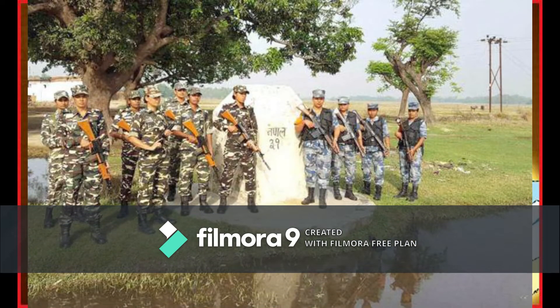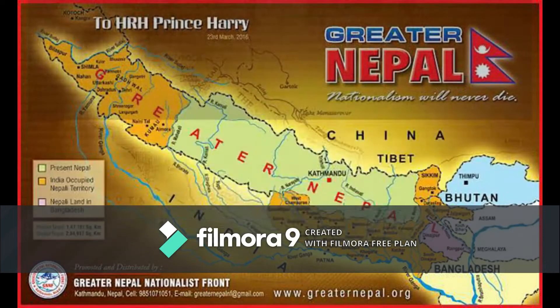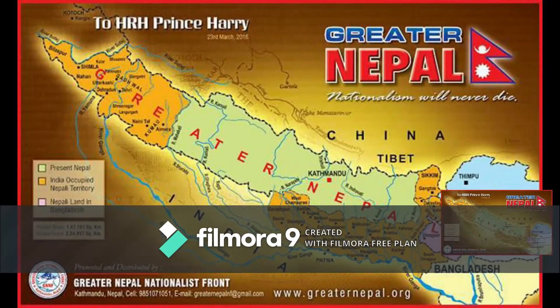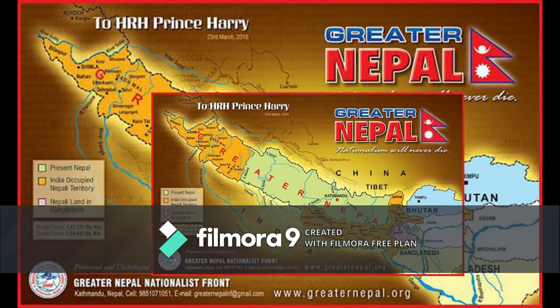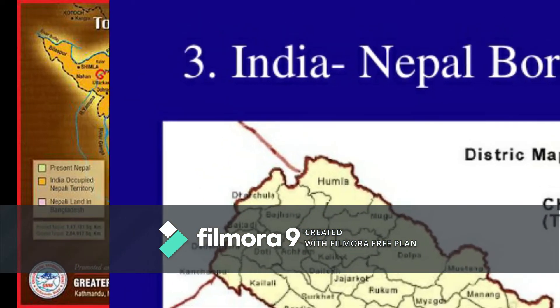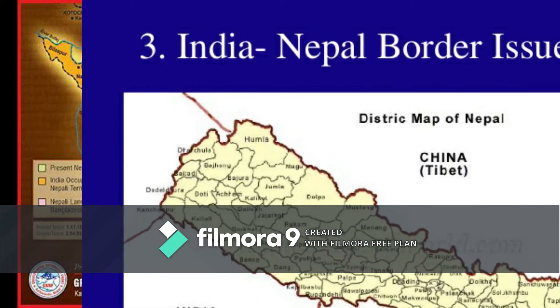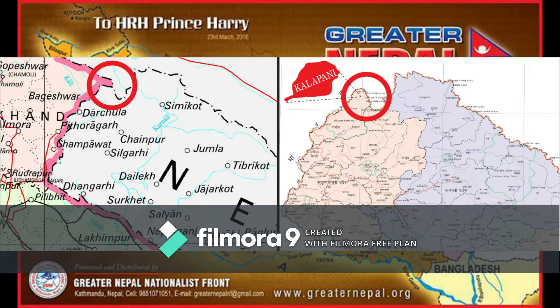As the first step for demarcating the Indo-Nepal border, survey teams from both countries located and identified missing pillars along the border, and an agreement was reached to construct new pillars in some places.